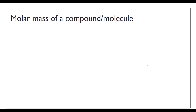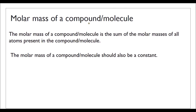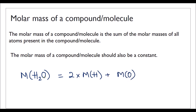To extend our understanding of molar mass: if you know the molar mass of an element, you can find the molar mass of a compound or molecule. The molar mass of a compound is just the sum of the molar masses of all atoms present. For example, the molar mass of water, H₂O, is two times the molar mass of hydrogen plus the molar mass of oxygen: 2 times 1 plus 16 = 18 grams per mole. That's why one mole of water is around 18 grams.